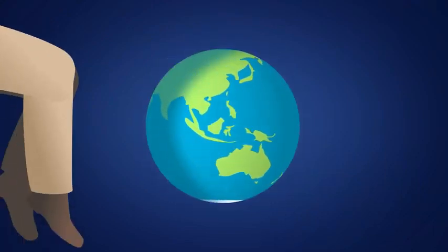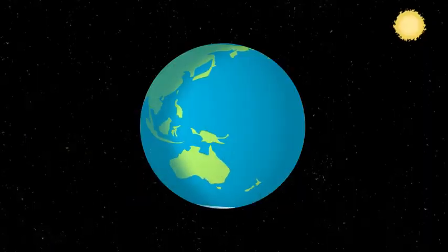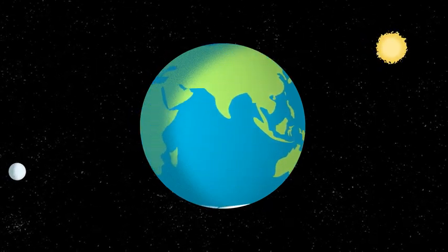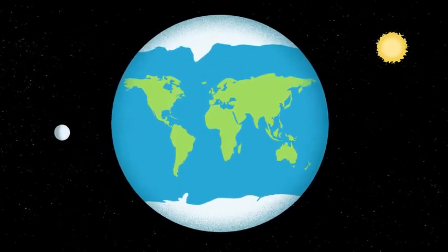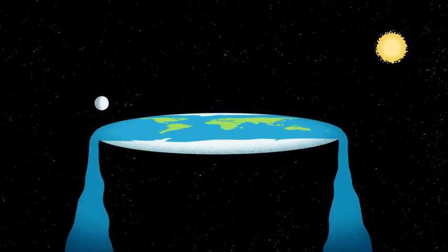A lifetime of indoctrination has given us a knee-jerk reaction to certain terms. Because the heliocentric globe is all we have ever known, when someone suggests that our creation is flat, we imagine some disk floating in outer space, perhaps with water flowing off the edge.